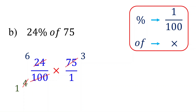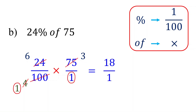Now multiply across. In the numerator, 6 times 3 equals 18. In the denominator, 1 times 1 equals 1. Therefore, 24% of 75 is 18.